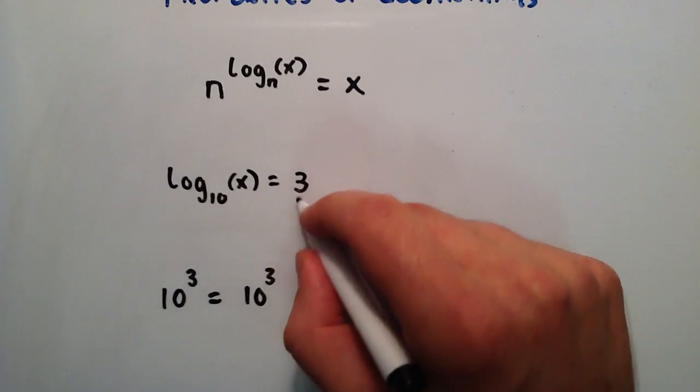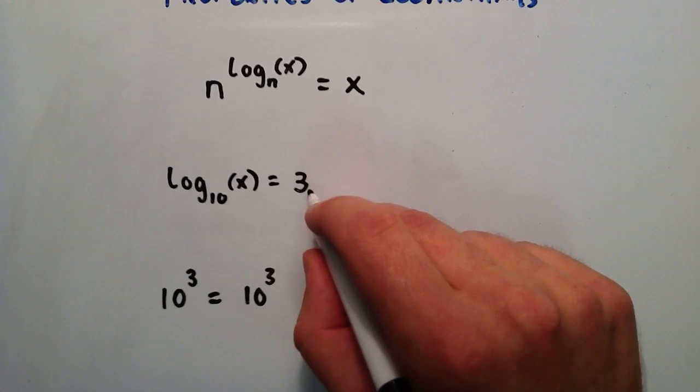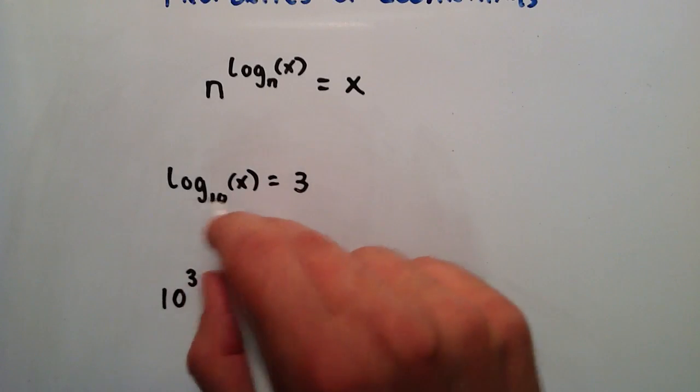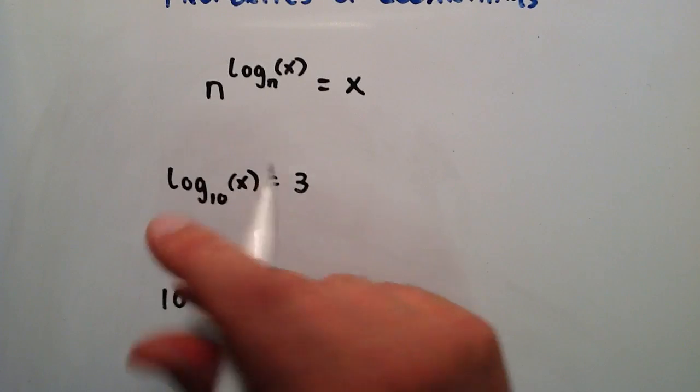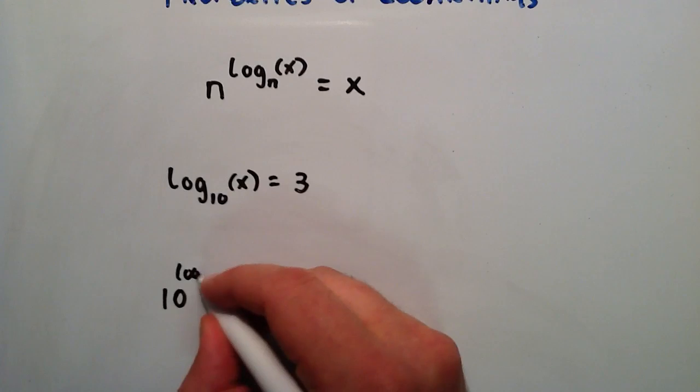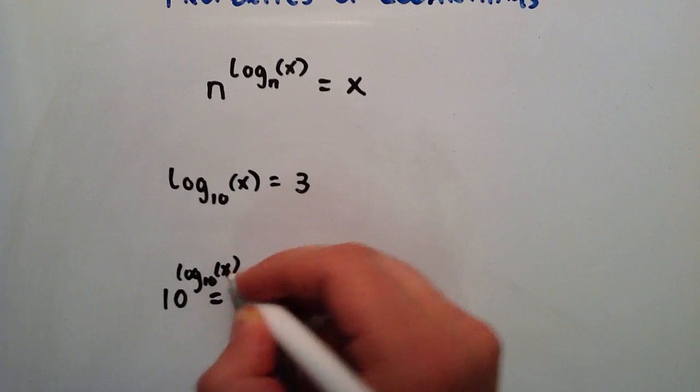So the reason why we're picking 3 is because of this side of the expression. And we just said that 3 equals all this stuff, so we can really change this side to log base 10 of x.